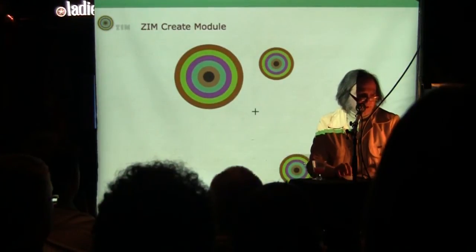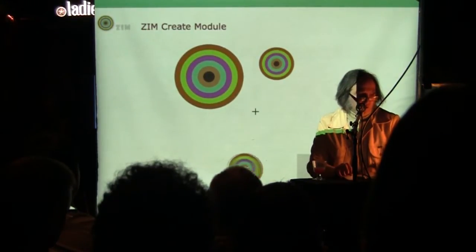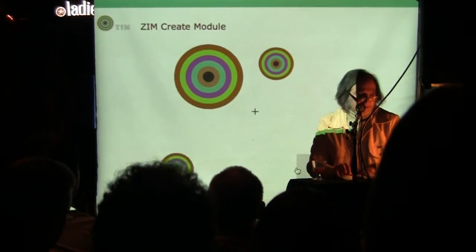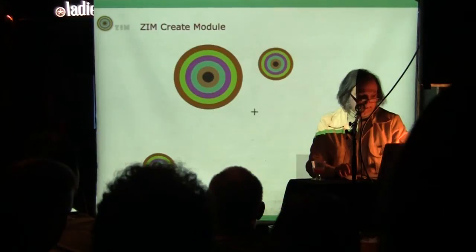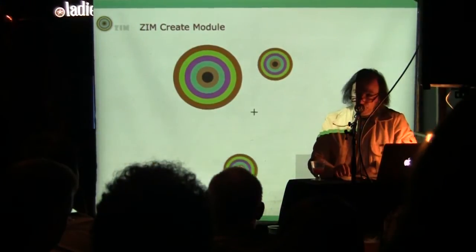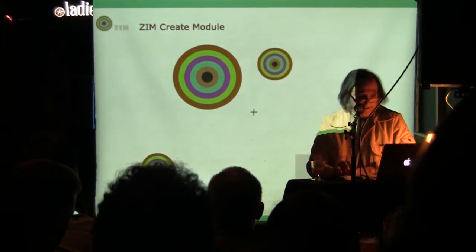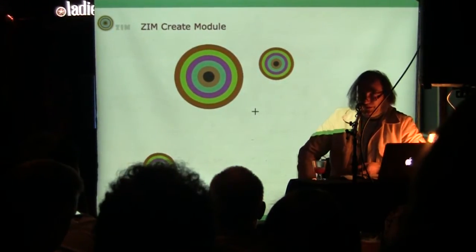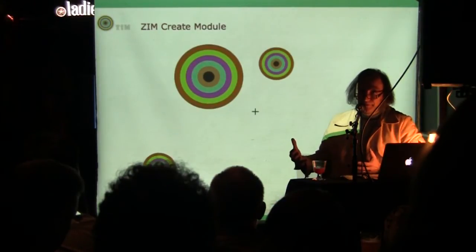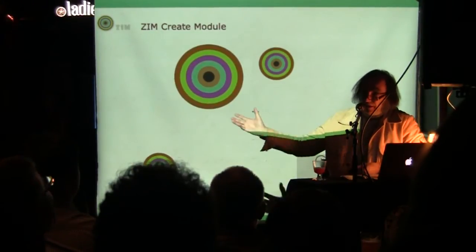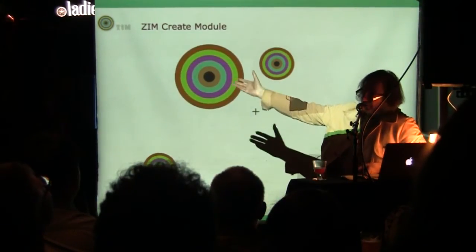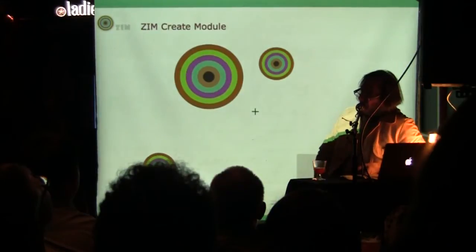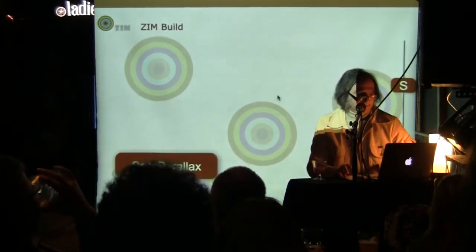When I move this one, did you see it kind of go back? That is Zim Move. Zim Move wraps the CreateJS TweenJS class, which is very powerful, much like most tween engines out there.